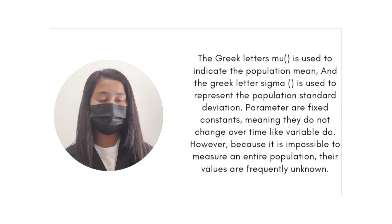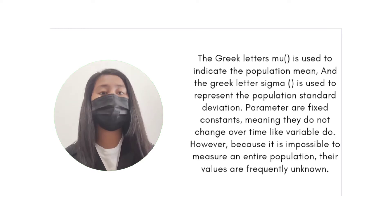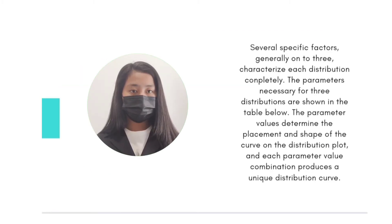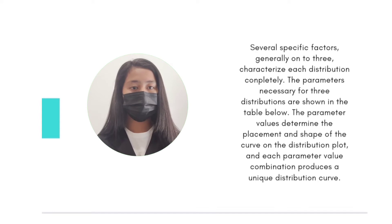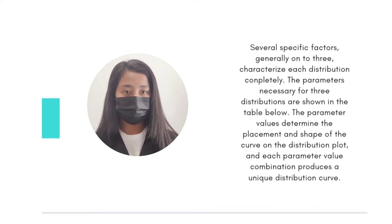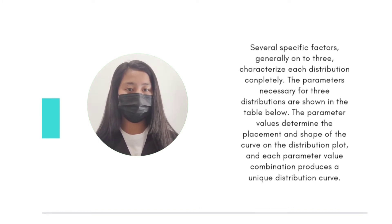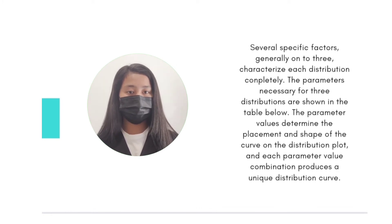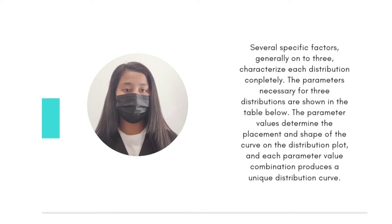Parameters are fixed constants, meaning they do not change over time like variables do. However, because it is impossible to measure an entire population, their values are frequently unknown. Several specific factors, generally up to three, characterize each distribution completely. The parameters necessary for three distributions are shown in the table below. The parameter values determine the placement and shape of the curve on the distribution plot, and each parameter value combination produces a unique distribution curve.